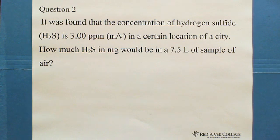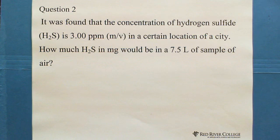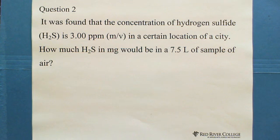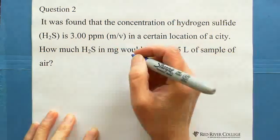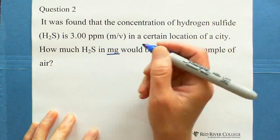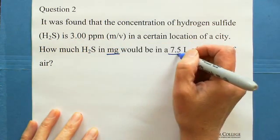Question 2: It was found that the concentration of hydrogen sulfide (H₂S) is 3.00 ppm as mass per volume in a certain location of a city. We are looking for how much hydrogen sulfide in milligrams would be in a 7.5-liter sample of air.